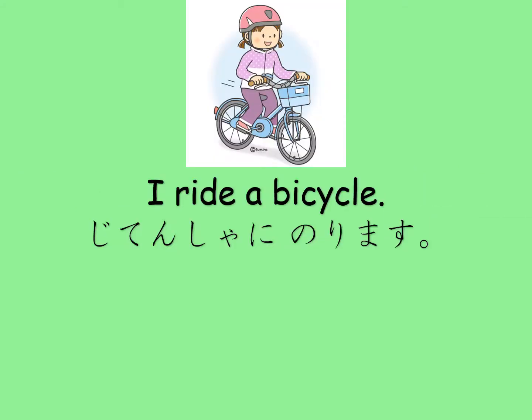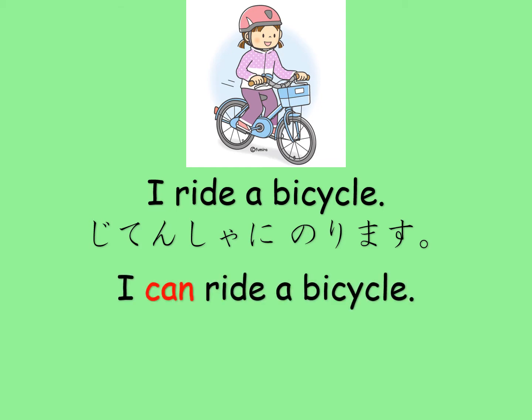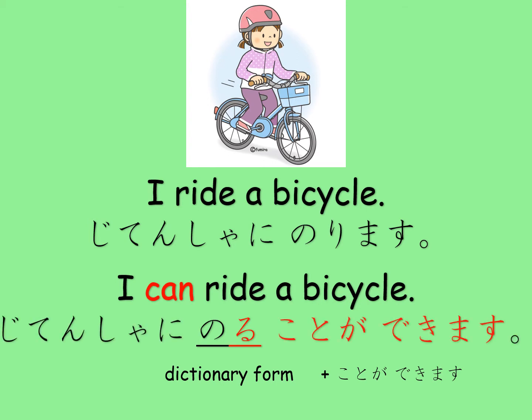The first example is about riding a bicycle. 'I ride a bicycle' is 自転車に乗ります。 If you want to change that into 'I can ride a bicycle,' you change the verb 乗ります to its dictionary form and add ことができます afterwards. So the sentence is 自転車に乗ることができます。